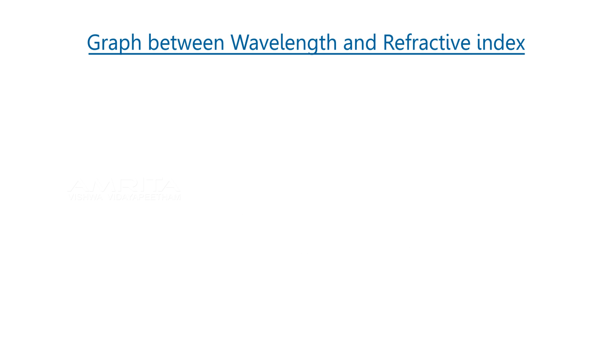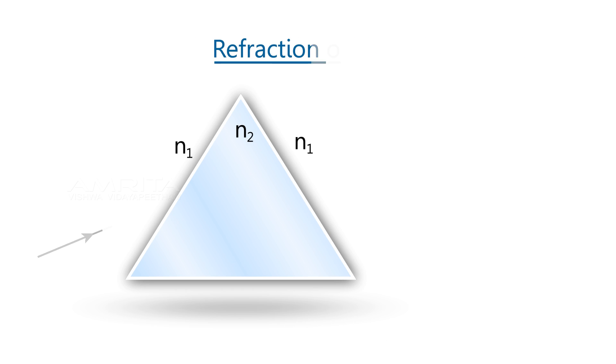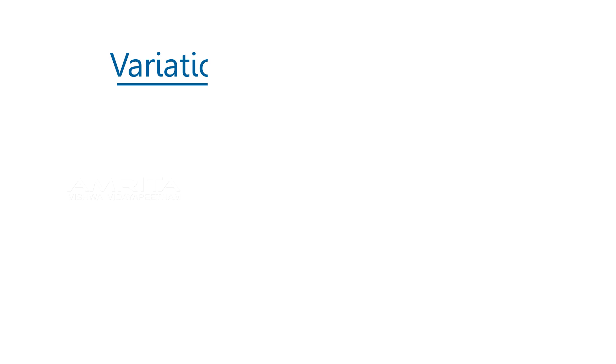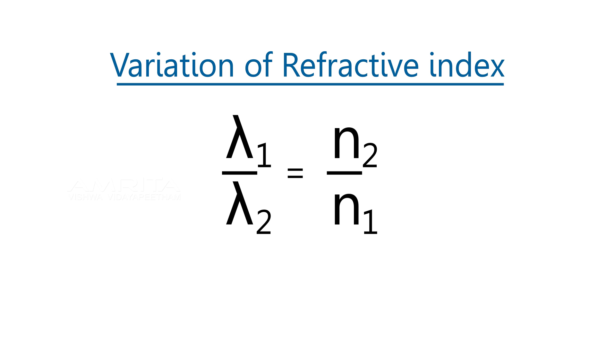Refractive index also depends on wavelength of light used because the speed of light waves depend on their wavelength. Light of different wavelengths will bend at different angles even if the angle of incidence are the same. Variation of refractive index at different wavelengths can be calculated as λ₁/λ₂ = n₂/n₁, where λ₁ and λ₂ are the wavelengths of first and second light source and n₁ and n₂ are the corresponding refractive indices of the liquid.